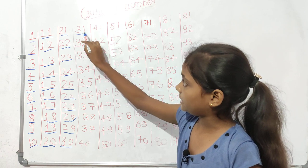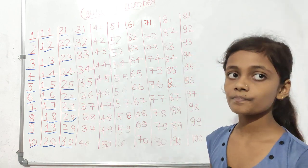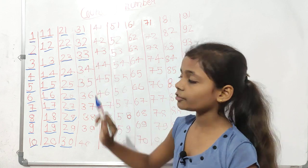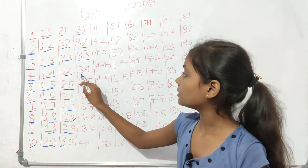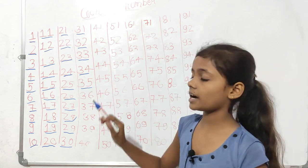Thirty-one, thirty-two, thirty-three, thirty-four, thirty-five.